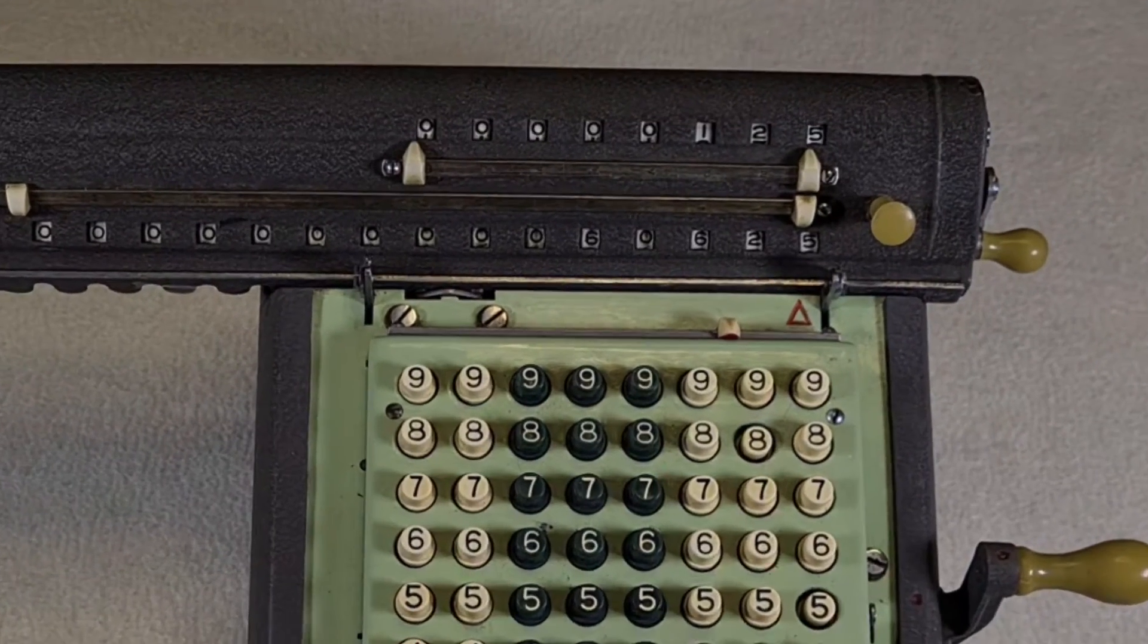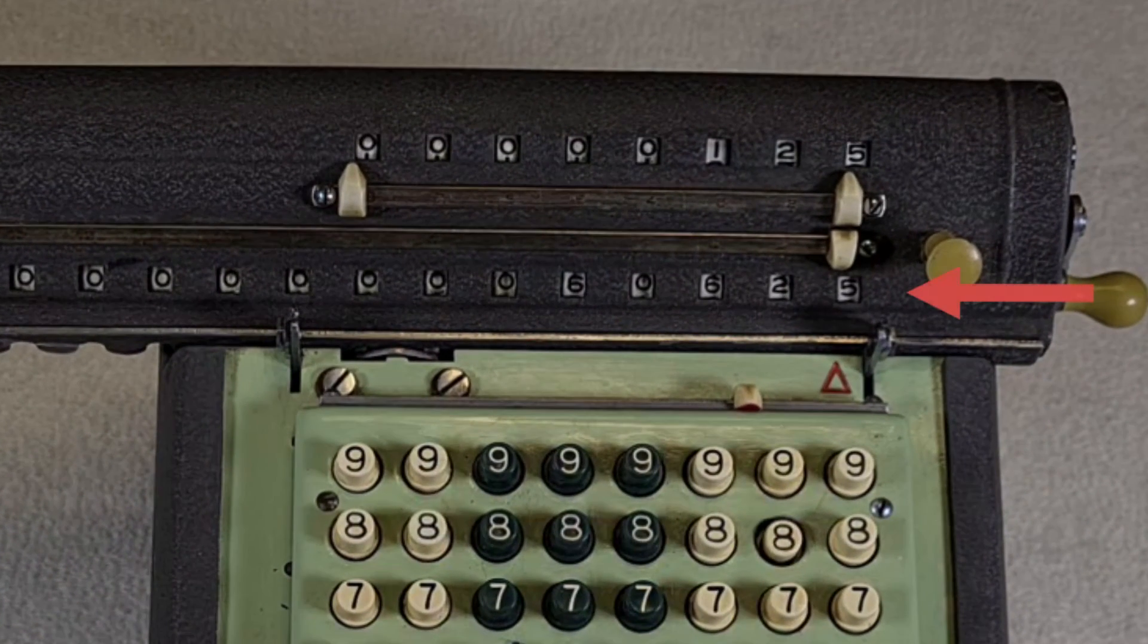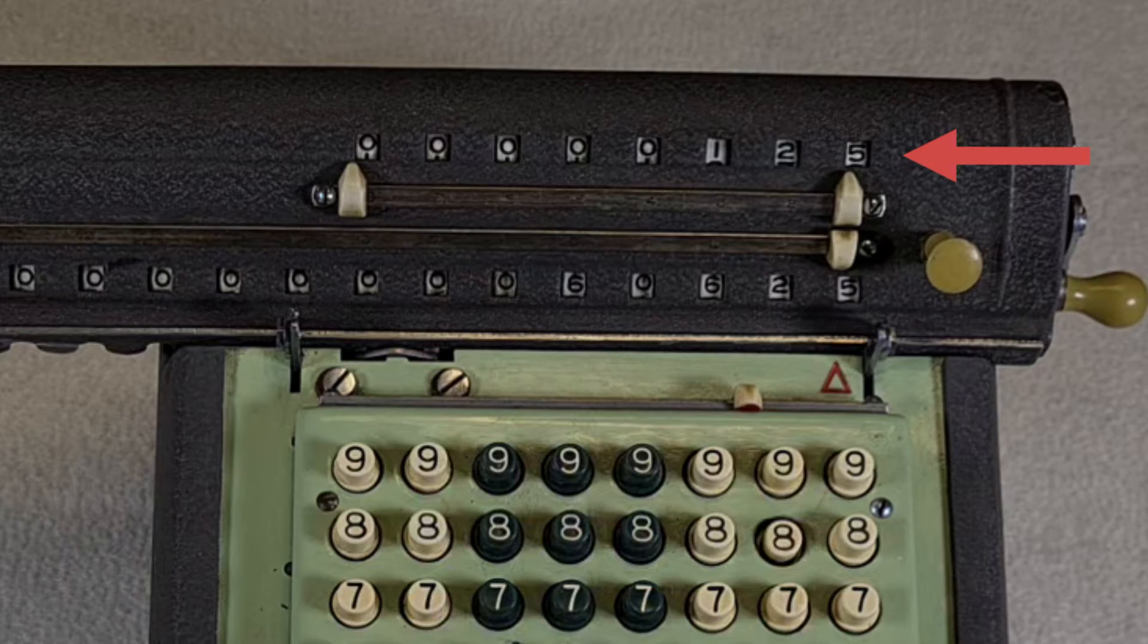And you have the result, 60625, and the factor of the multiplication, 125, if you want to check, it's correct. Isn't it nice?